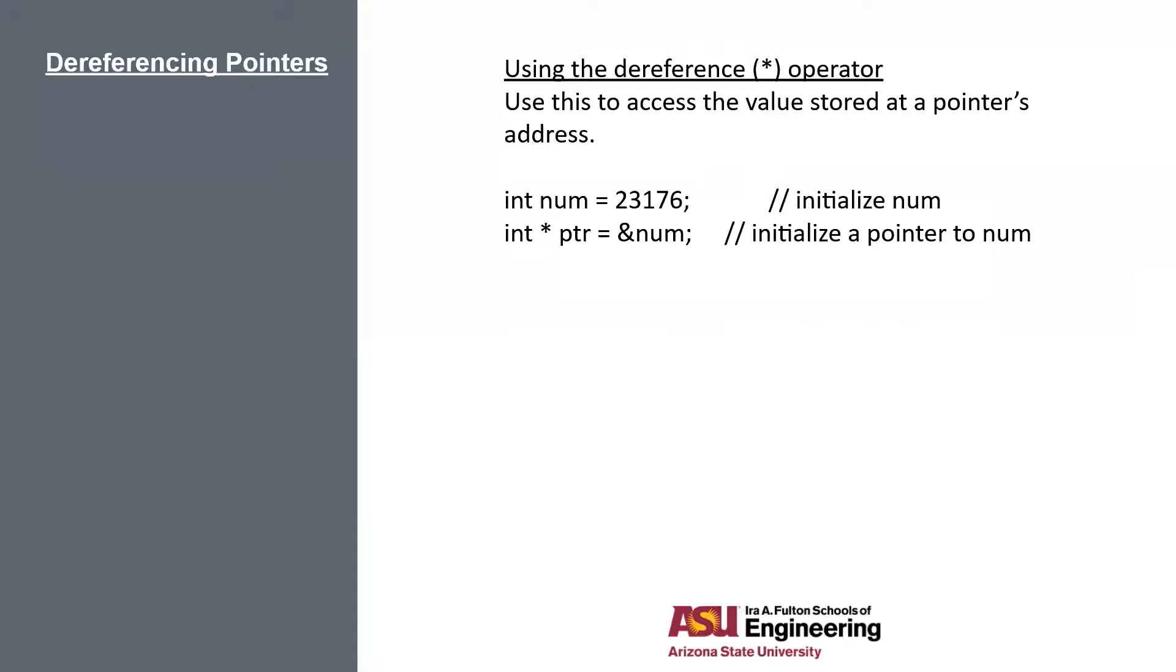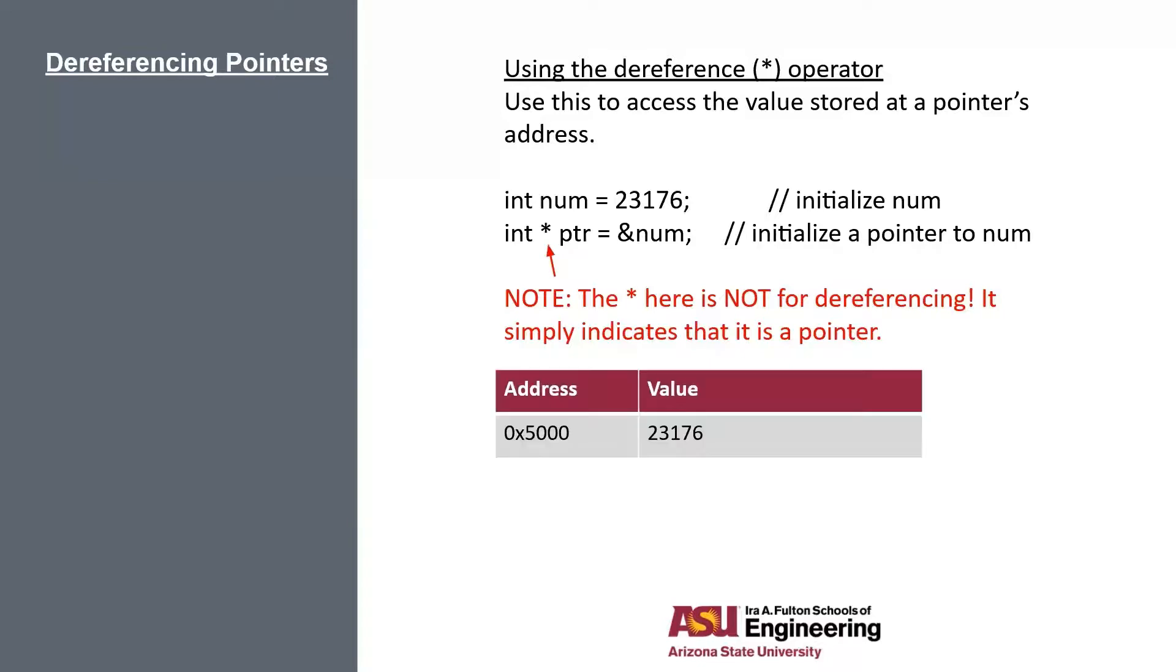Here's an example. Let's make another integer and set it equal to 23176, then initialize a pointer to our new variable. Also a quick note, this star here has nothing to do with dereferencing. This is just part of the syntax for declaring a new pointer. Okay, so this is what it looks like in memory.